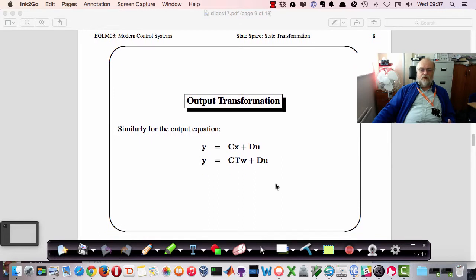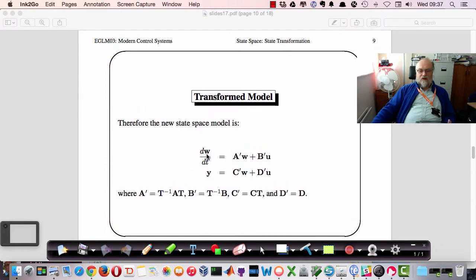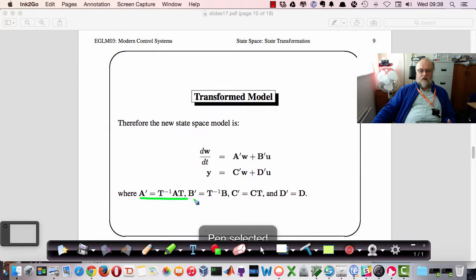So that's a useful result as we'll see in a minute. Similarly, if we look at the output equation, simply replacing x by Tw gives us a variation of the output equation, CTw plus Du. So this gives us a transformed model, basically another state-space model, this time with states defined as w. And of course D is not changed by the transformation.